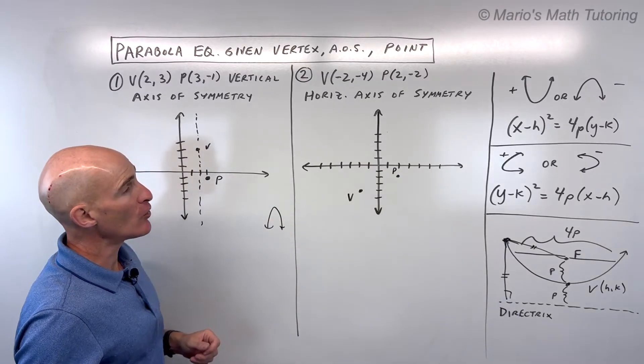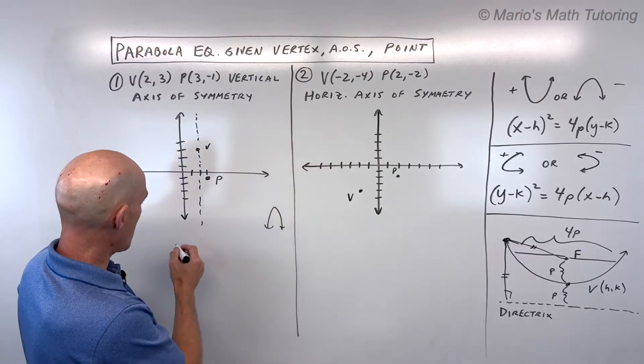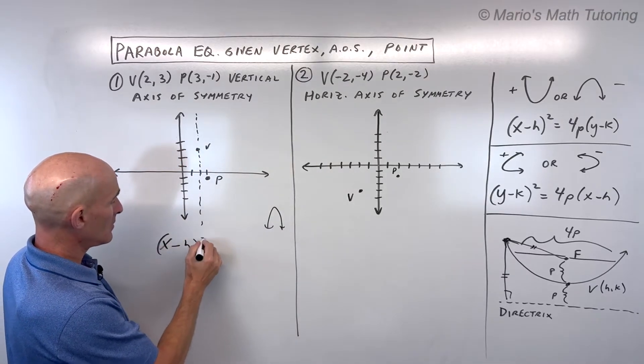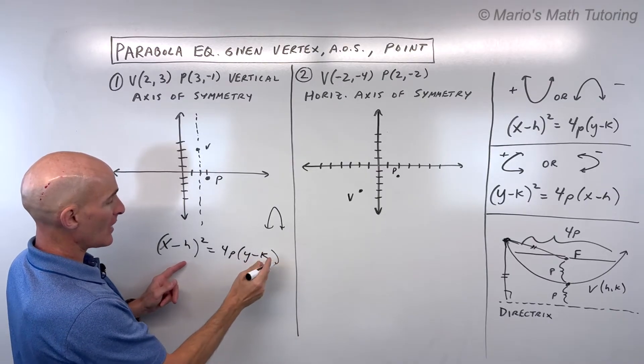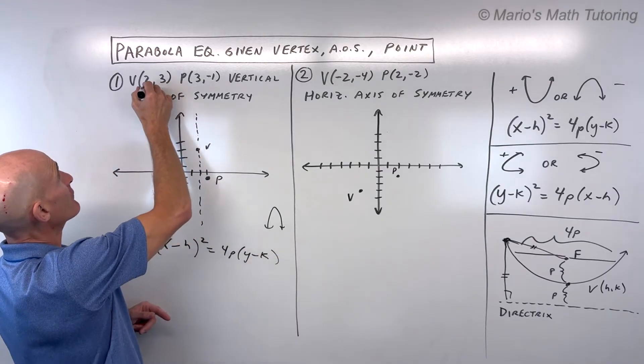Which means that we know that it's in this form, (x-h)² = 4P(y-k), where (h,k) is our vertex.